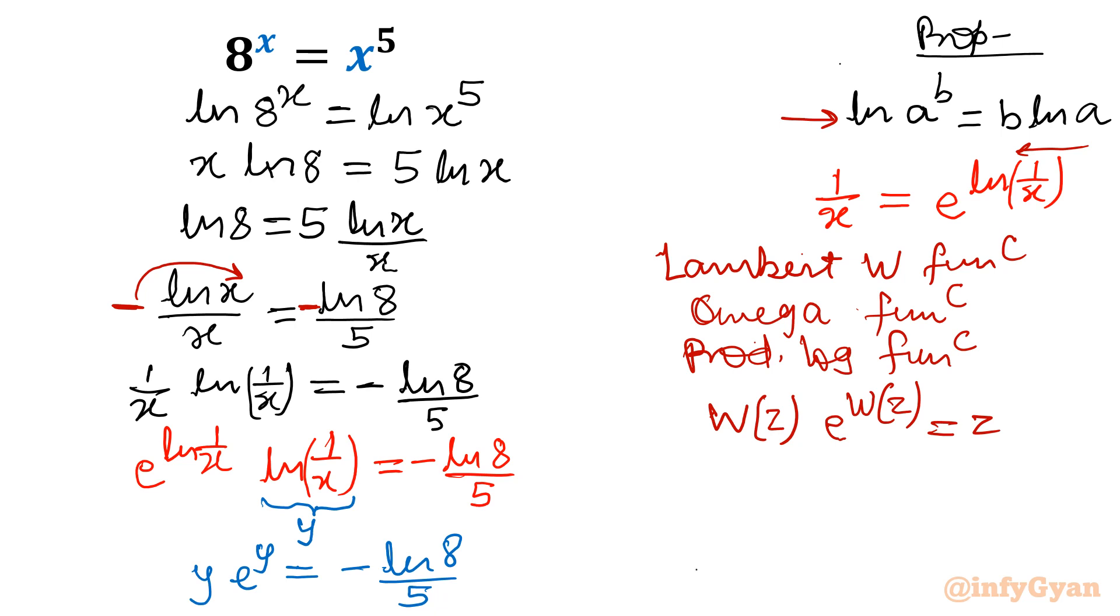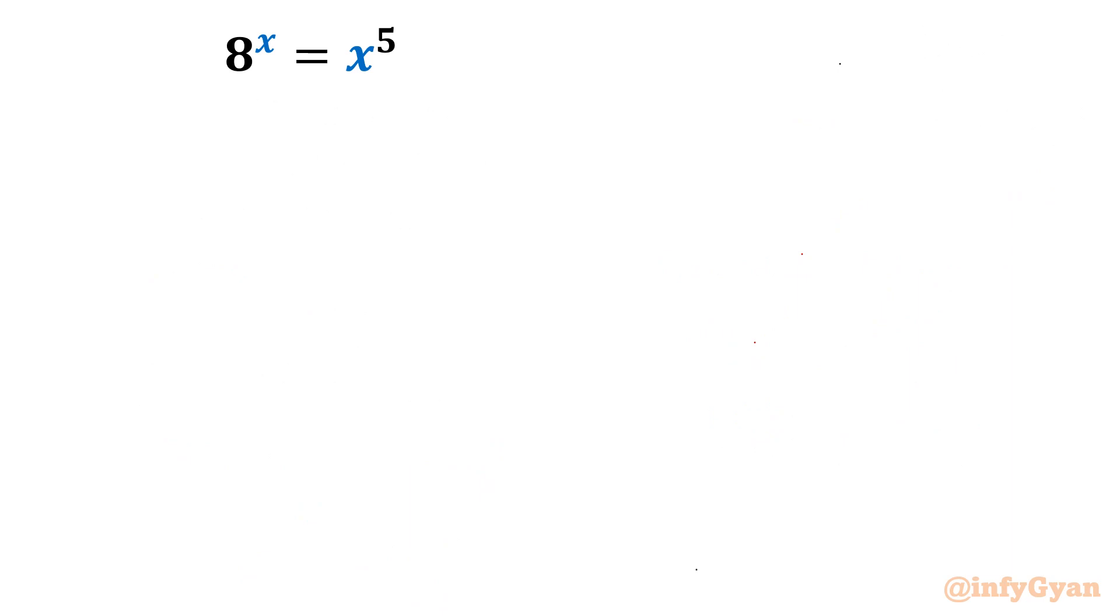So what I will do now. Now you can see this is your y. It is your e raised to the power y is written as z. So if you will compare both equation, we can get from this equation the Lambert W function equation. So that function would be y e raised to the power y equal to minus ln 8 over 5. This was our original equation. Now solve this equation in terms of Lambert W function. So equation will give us y equal to W minus ln 8 over 5.